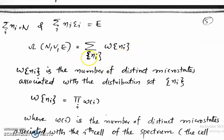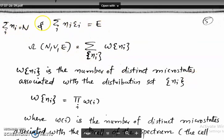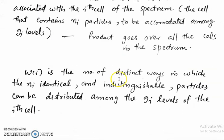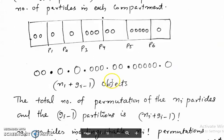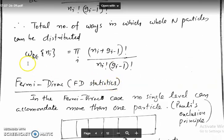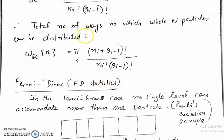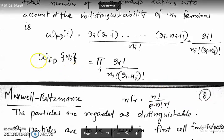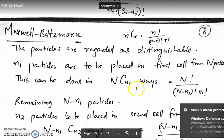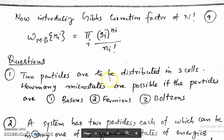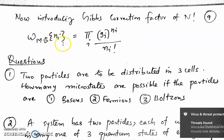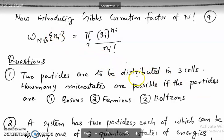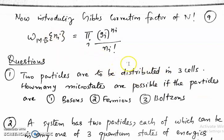We sum over all possible distribution sets satisfying the two constraint equations. We have found expressions for W(Ni) for three cases: for the Bose-Einstein case, we obtained one expression; for the Fermi-Dirac case, we obtained another expression; and for the Maxwell-Boltzmann case, we got a third expression. So we have W(Ni) for all three statistics.